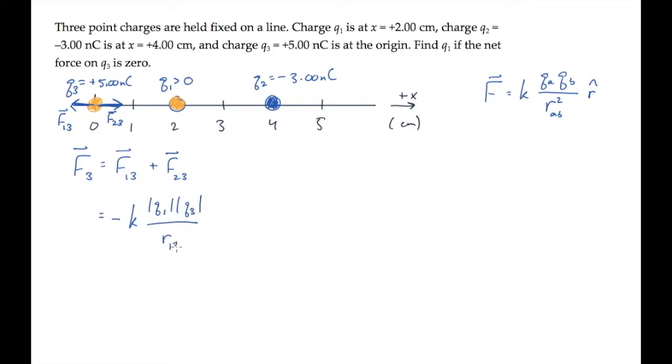Here I'm using magnitudes because we already know the direction, so I want everything else in this expression to be positive. We divide by the distance between those two charges squared, and it's in the negative x-hat direction.